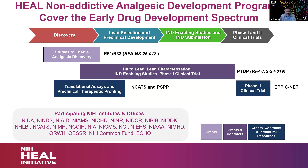The first is Studies to Enable Analgesic Discovery. There are also some programs at NCATS, including the Preclinical Screening Platform for Pain, PSPP. And to continue on the spectrum of R&D for pain therapeutics, there are programs for later phase clinical trials, such as EPICNET.